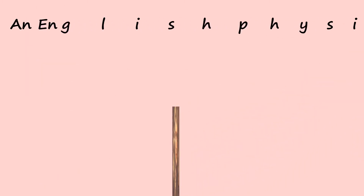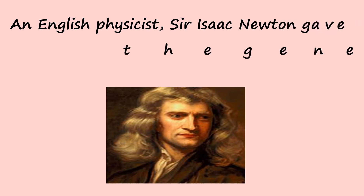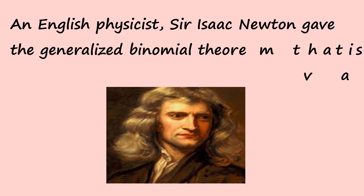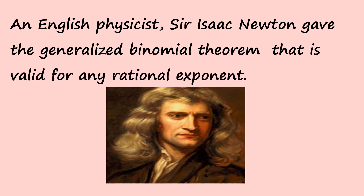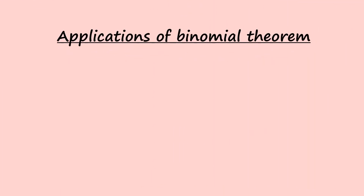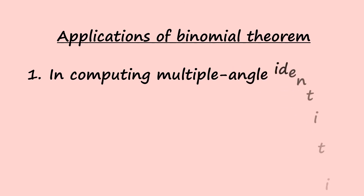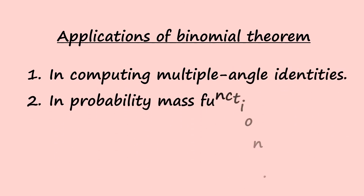English physicist Sir Isaac Newton gave the generalized binomial theorem that is valid for any rational exponent. There are many applications of binomial theorem, but it can be seen in computing multiple angle identities and in probability mass functions.